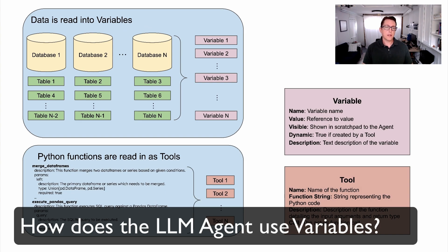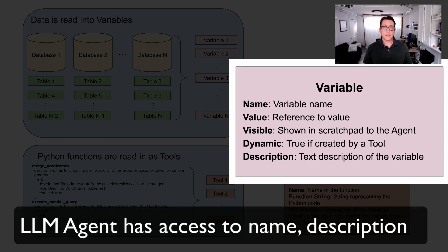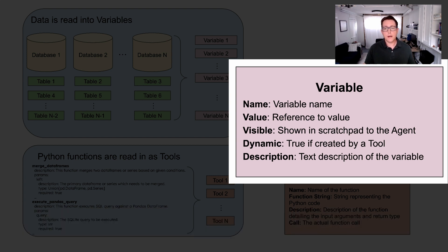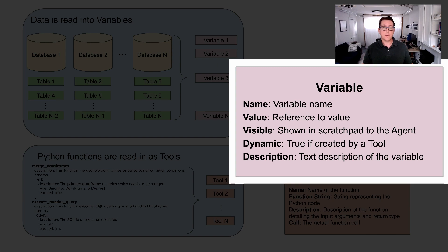For the LLM to be able to use variables, it needs to know a bit about them. So we give the variables a name and a description so that the LLM knows what data it has access to. It's important to point out that we only give the LLM the name and description of the variables, not the data contained within that variable. This can save a massive amount of context space.